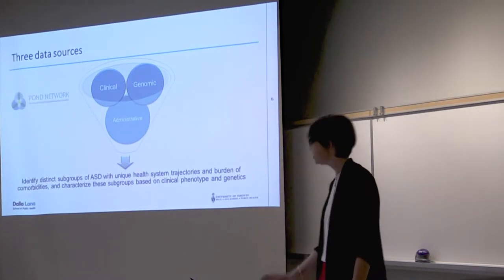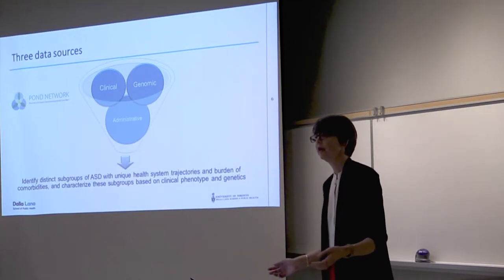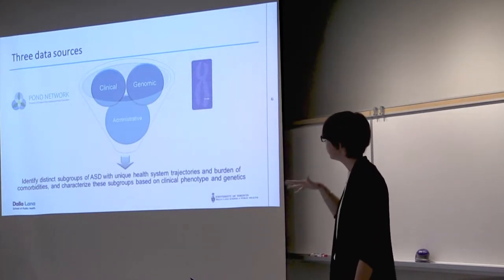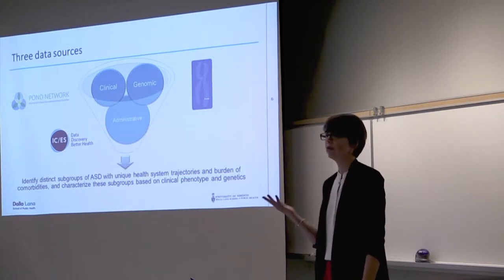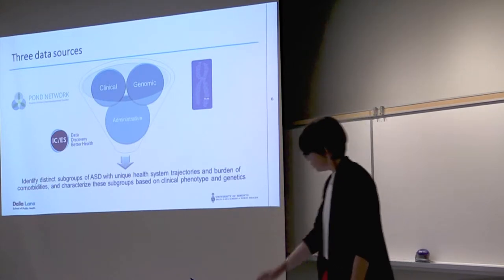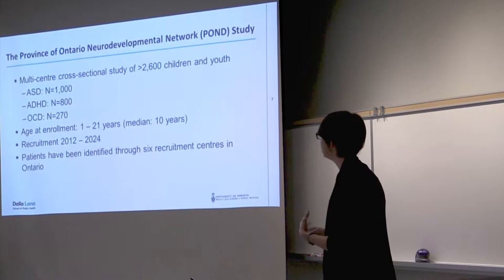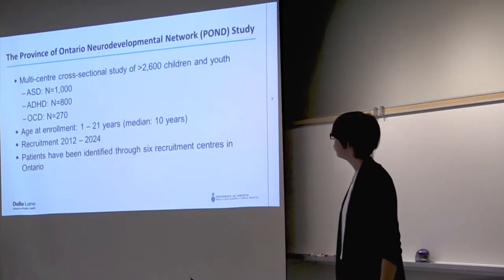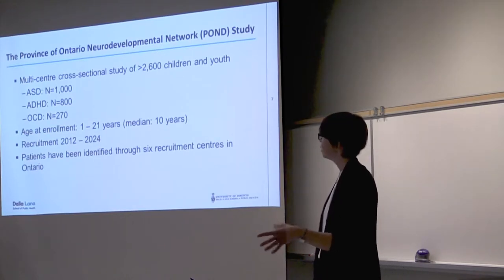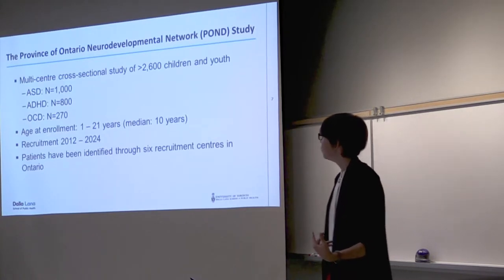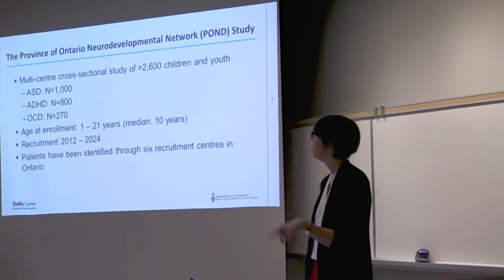We're bringing together three data sources. We're using data from the Province of Ontario Neurodevelopmental Network, the POND study, which is the source of the clinical data. The sequencing was done at the Centre for Applied Genomics. We also have the administrative health data at the Institute for Clinical Evaluative Sciences, or ICES. The POND study is a multi-center cross-sectional study where just over 2,600 children and youth between the ages of 1 and 21 years have been recruited. Most have a primary diagnosis of autism or ADHD. Recruitment started in 2012 and was renewed through to 2024.